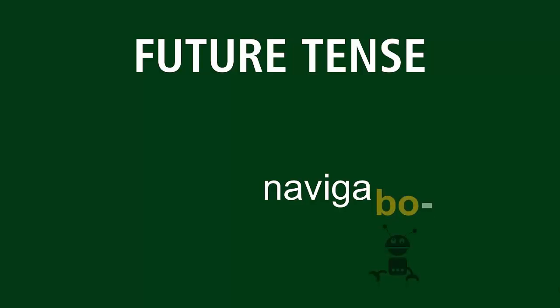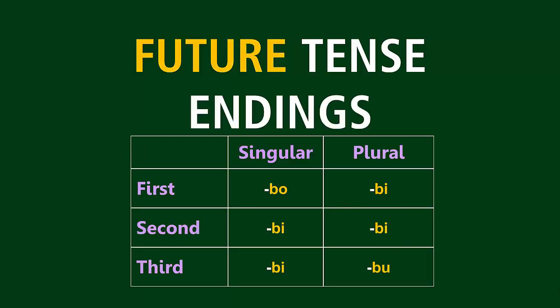Great. Now we add the robot sounds — that's Bo-bee-bee-bee-bee-boo — then you just add the personal endings. In other words, the O-M-S-T-Moose-T's-N-T onto the end of the robot noises. Now, the first person singular has been the one to keep an eye on so far. In this case, the O ending is already there, so you don't need to add anything at all. The first person singular ending is just Bo.